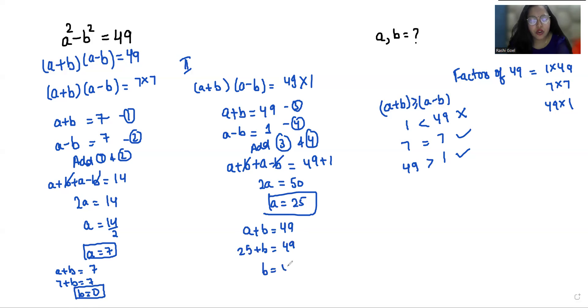then b = 49-25 = 24. So the possible values are: when a = 7, b = 0,